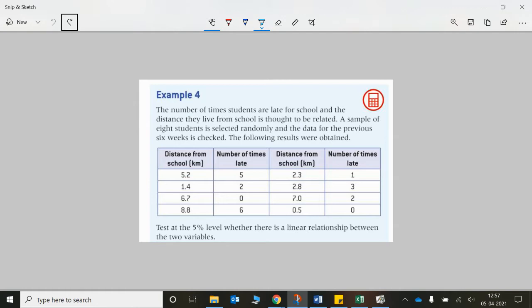So first thing I'm going to do is go and put this information into my calculator. I've got the TI-Inspire. I'm going to go to add new document, go to spreadsheets and put the data in. So I've got 5.2, 1.4, I'm just putting this in column A. I've got 6.7, 8.8, 2.3, 2.8, 7 and 0.5. So you can try this as well.